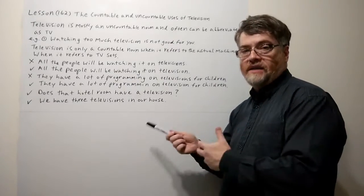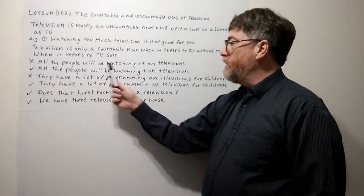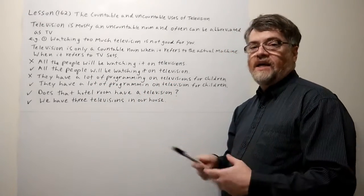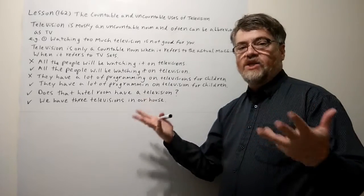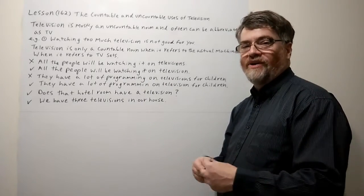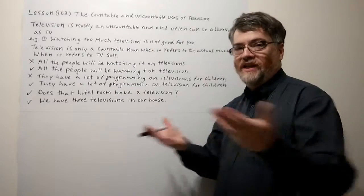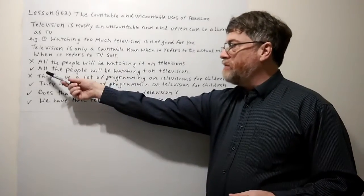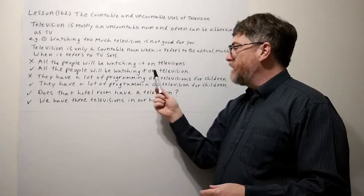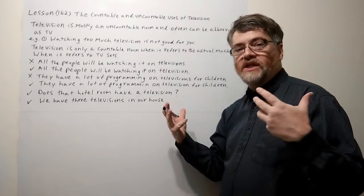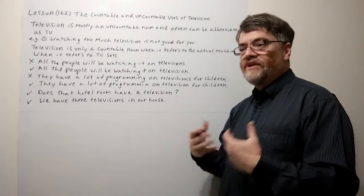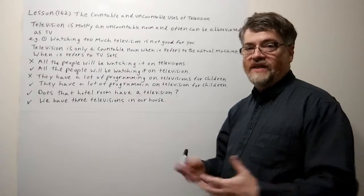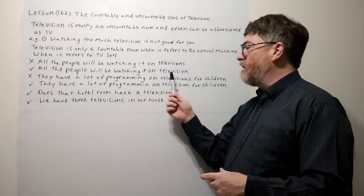This is where a student might make a mistake: 'All the people will be watching it on televisions.' Here you mean television in the general sense, so we're not talking about a bunch of different televisions all over the place. The correct way is: 'All the people will be watching it on television.' You're not really talking specifically about all the different TV sets.